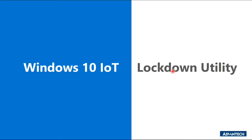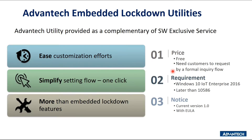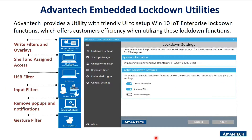Regarding the Windows 10 IoT Lockdown Utility — at Advantag, we assist in utilizing the Windows 10 IoT Enterprise lockdown function to create a user-friendly UI. Instead of typing commands in the command line, you can use the UI to click on different settings. This is a screenshot of the Windows IoT Lockdown Utilities — clicking on settings in the left column, you can modify shell launches, keyboard filter, settings, remove pop-ups, notifications and more.